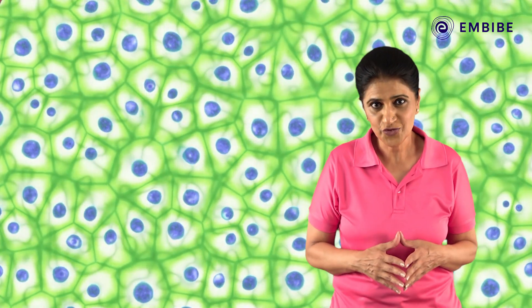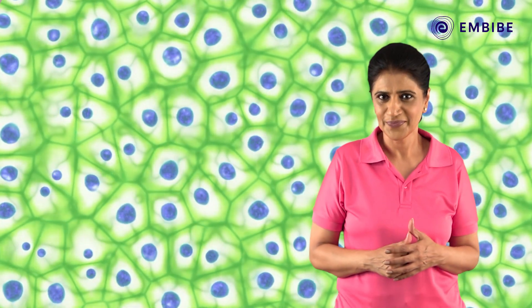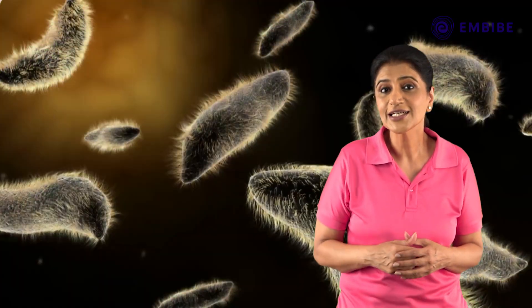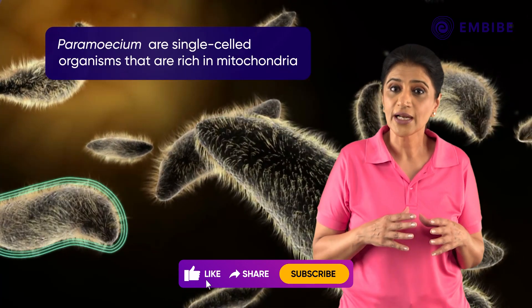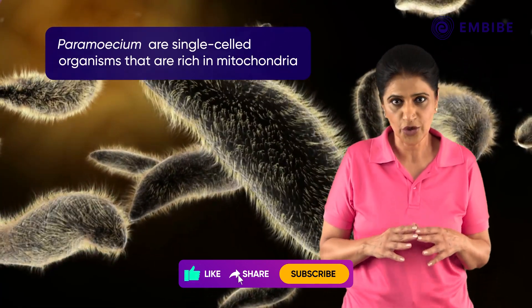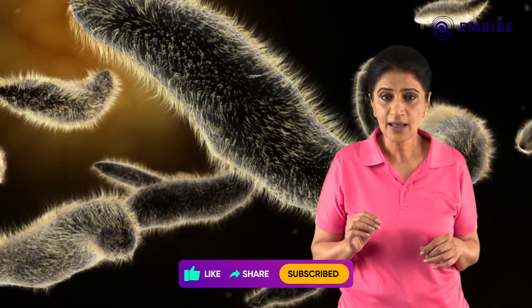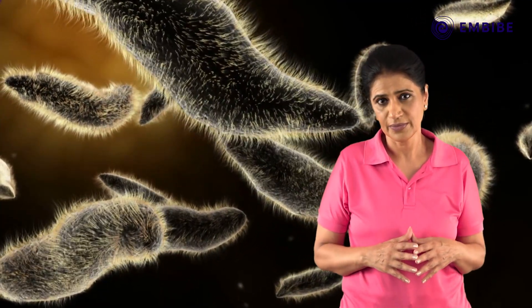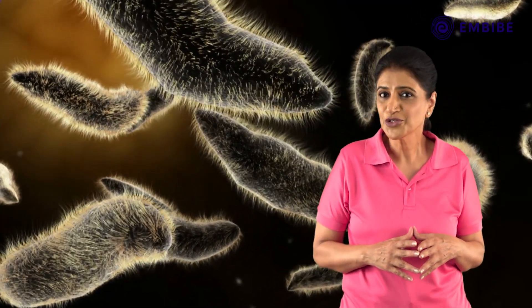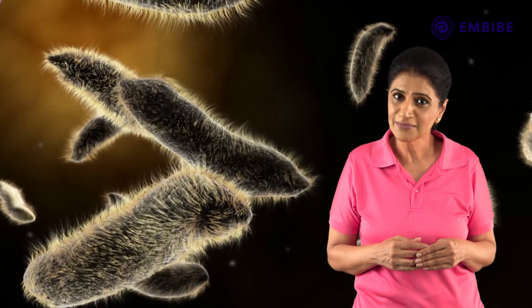Digested food is processed in the mitochondria in order to obtain energy. Single-celled eukaryotic organisms such as paramecia are rich in mitochondria — each individual cell may contain about 5,000 of them. Did you know that mitochondria have their own DNA as well?